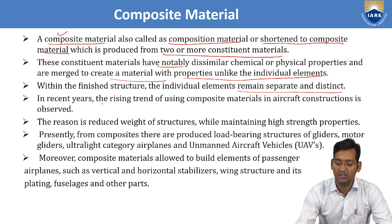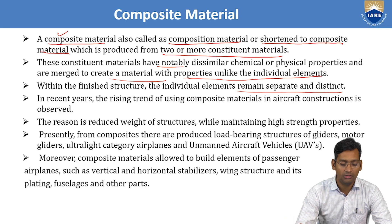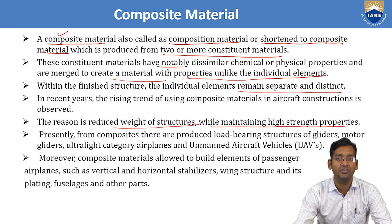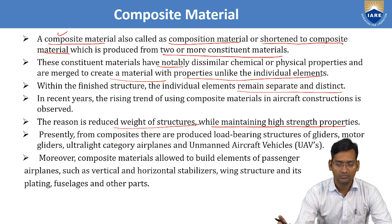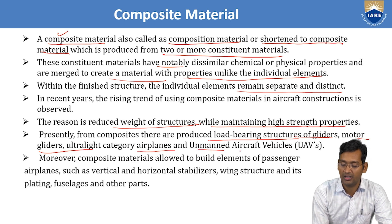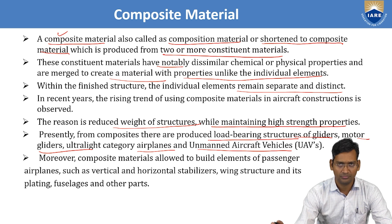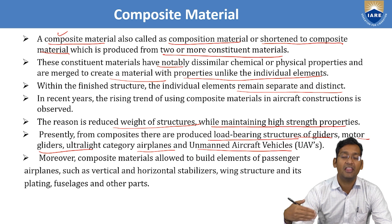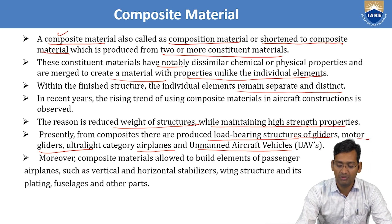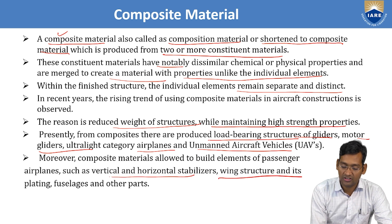In recent years, a rising trend of using composite materials in aircraft construction is observed. Because of their enhanced properties, composites are used in aircraft construction. The main reason is their reduced weight while maintaining high strength — that is, a higher strength-to-weight ratio compared to conventional materials. Currently, composites are used in load-bearing structures of gliders, motor gliders, ultralight aircraft, and unmanned air vehicles.